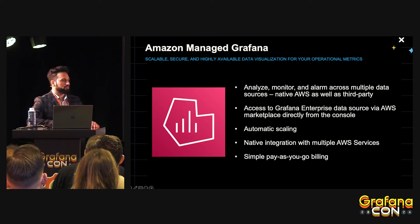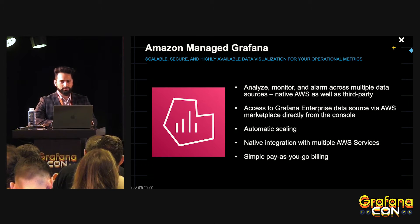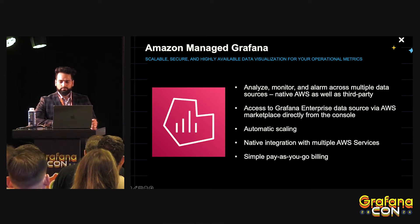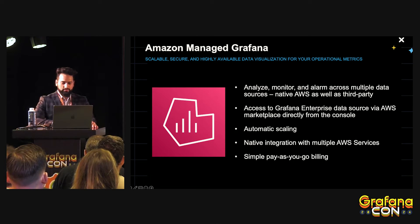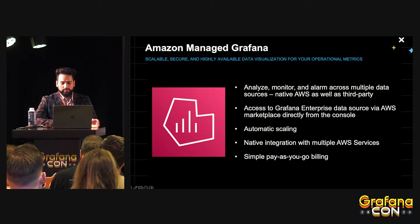At AWS, we offer Amazon Managed Service for Grafana, which is a fully managed, multi-cloud, cross-project service with interactive data visualization capabilities. Using Managed Grafana, you can analyze, monitor, and set alarms on metrics, logs, and traces across multiple data sources, including AWS or other cloud providers, third-party ISVs, and also databases.